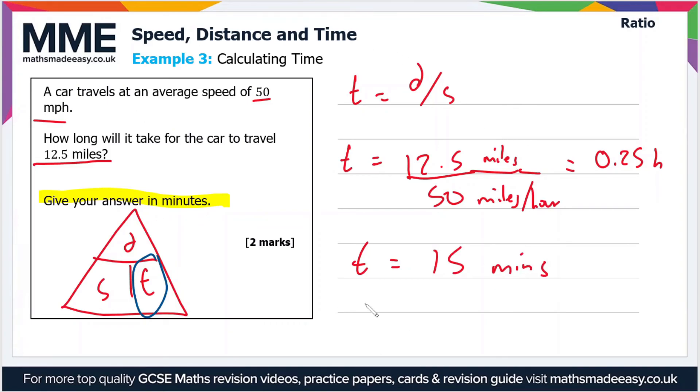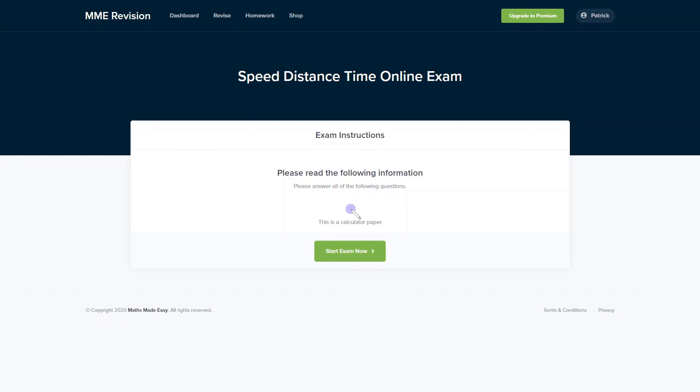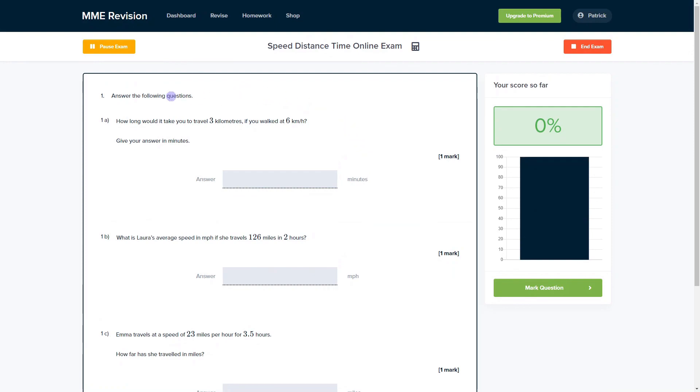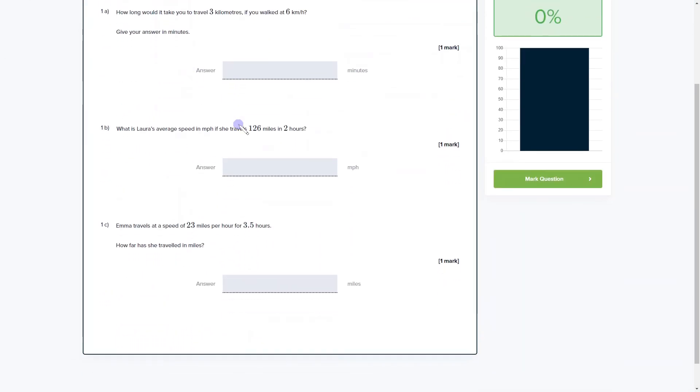So that's about all there is to this topic. So the best way to improve on this topic is just by getting loads of practice in. You can do so with our online exam. It's available through our revision platform and there's loads of different questions to have a go at in this exam and you get instant feedback on all of them.